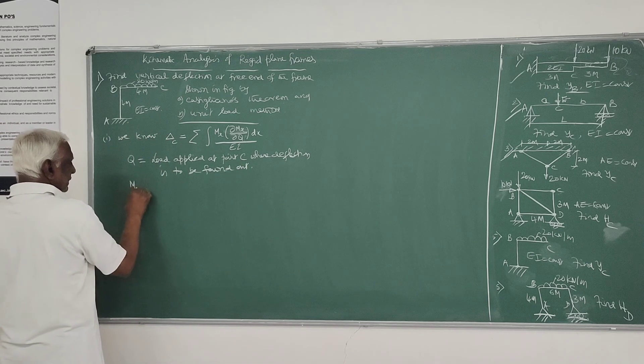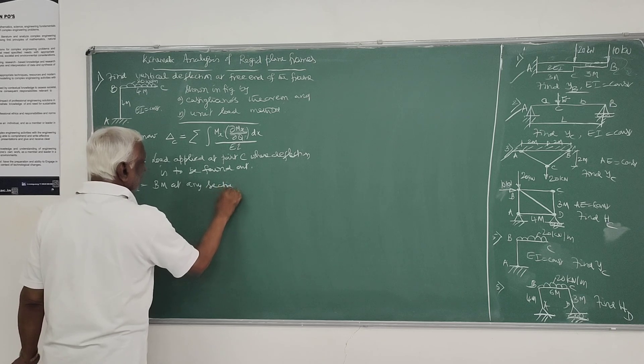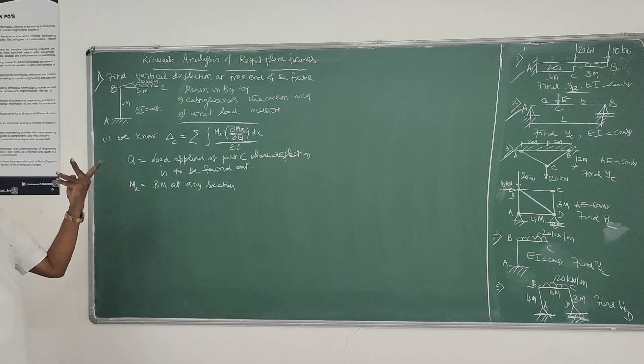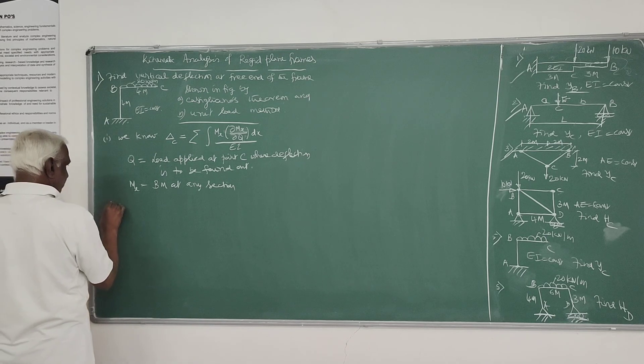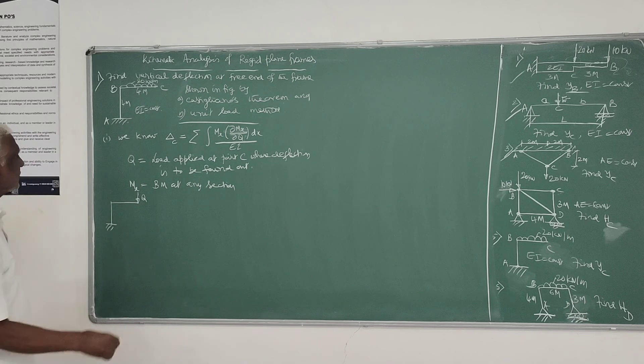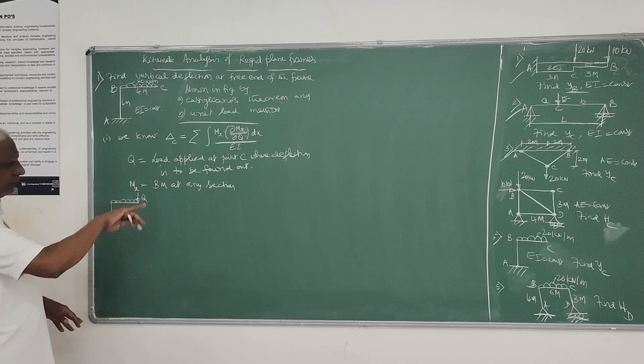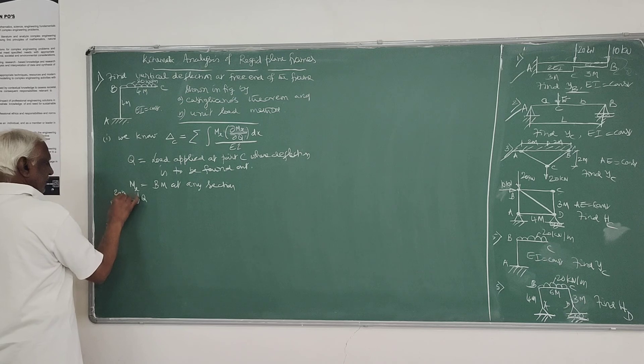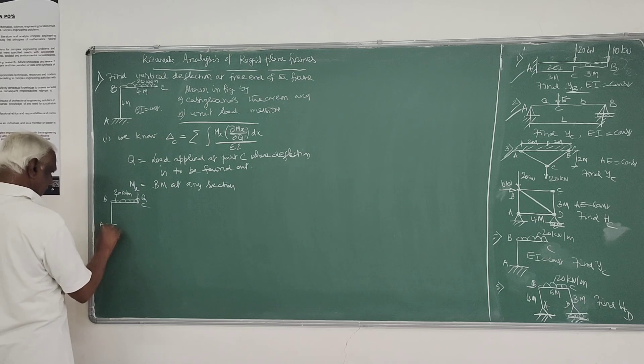MX is the bending moment at any section. Wherever there is change in loading along the member, you take different sections. We have to apply a load Q at the point where deflection is required. If there is a load, replace it as Q. If there is no load, apply Q and put the value as zero.